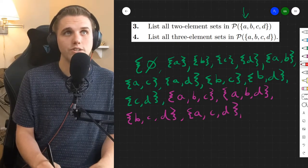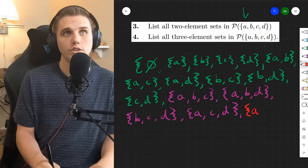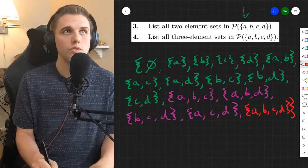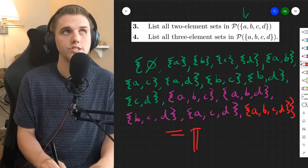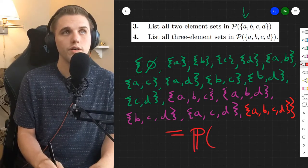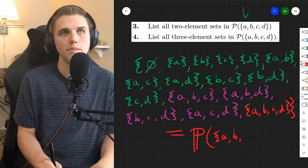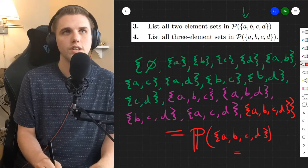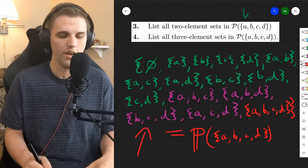And then last but not least in our power set, we have a set of size four, which is A, B, C, and D. So this is the power set of the set containing A, B, C, and D. The power set of this is this set right here.